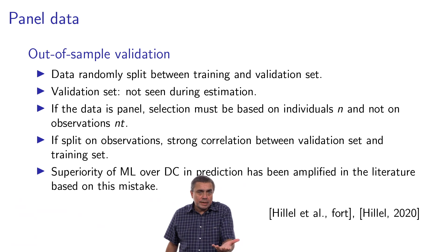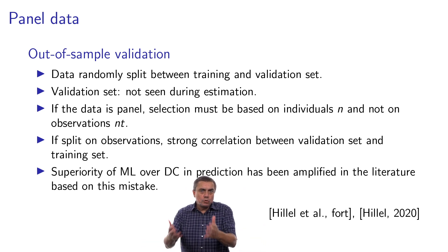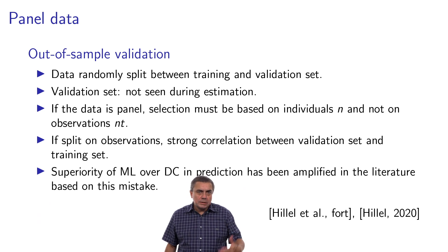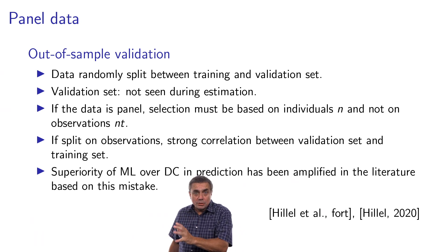So in the literature, there are several examples where machine learning has been reported to be superior to discrete choice in prediction because the wrong validation set formation has been selected. It has been based on observations and not on individuals. And if you redo the analysis using the correct way of selecting the validation set, you observe that basically the machine learning method is performing almost as well as the discrete choice. There is not a big difference. So I refer you to the papers by Tim Hillel for the details, but this is important to keep in mind that you have to define properly the validation set for the machine learning method to be valid.